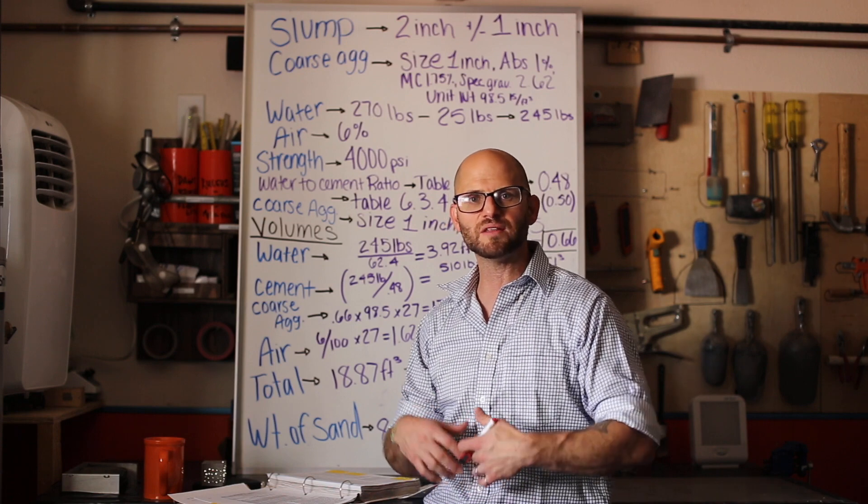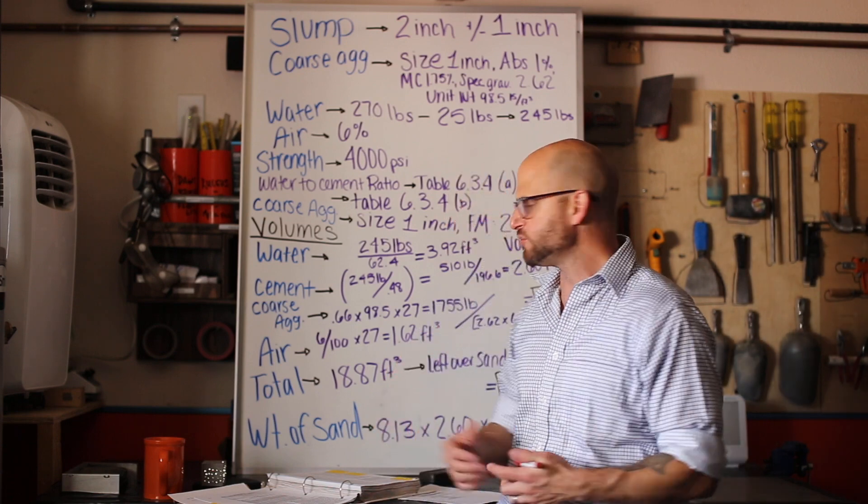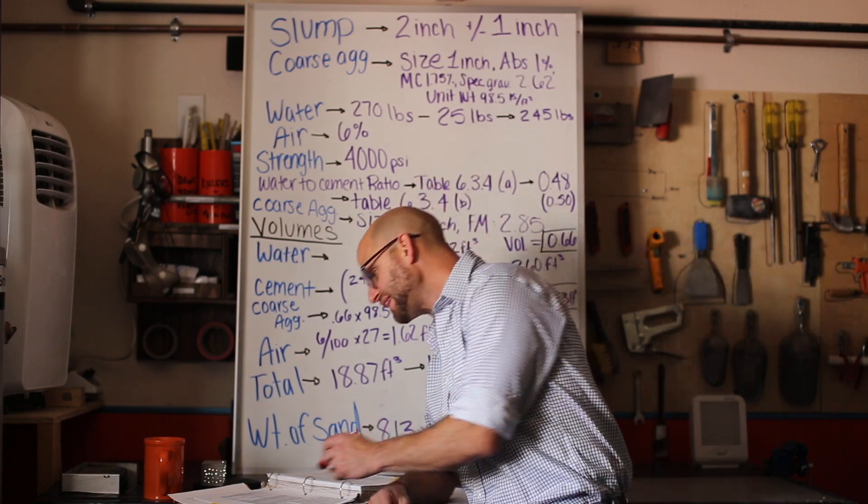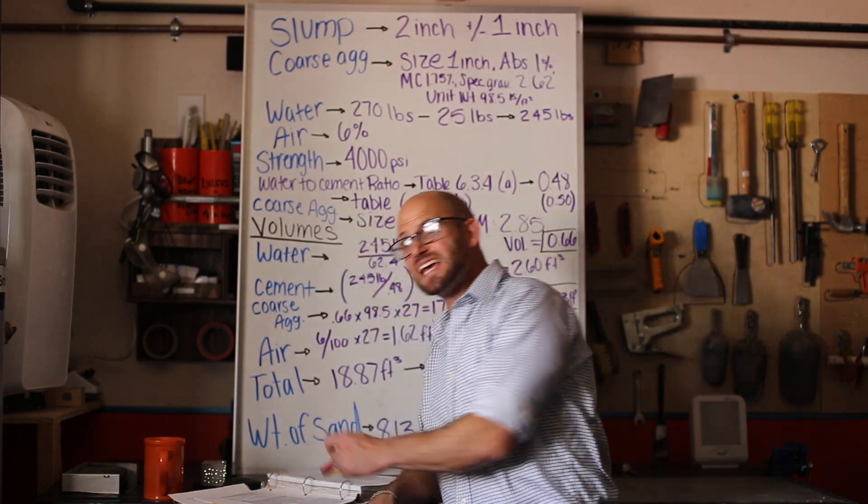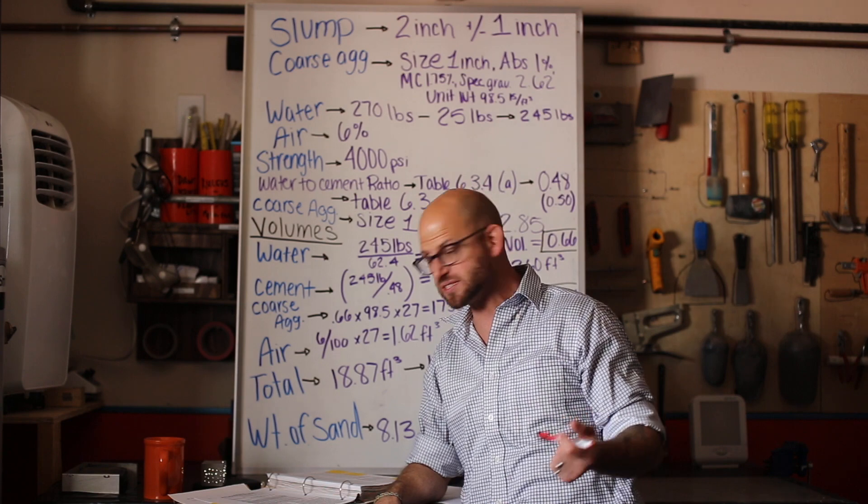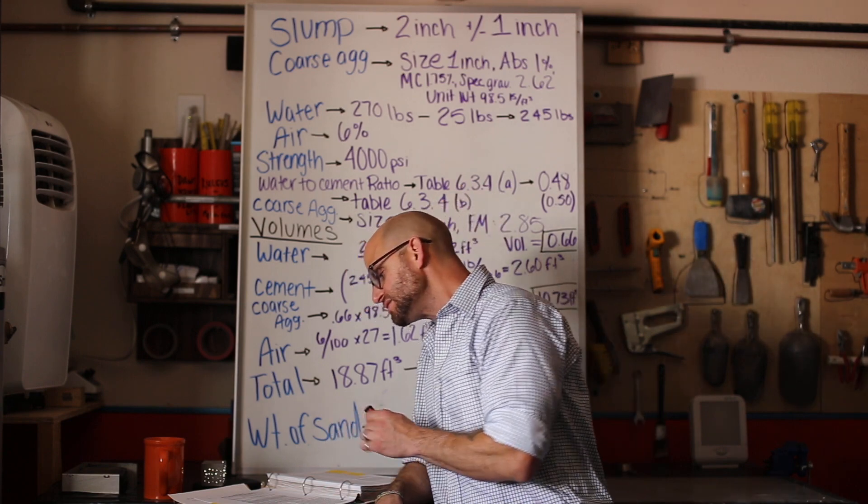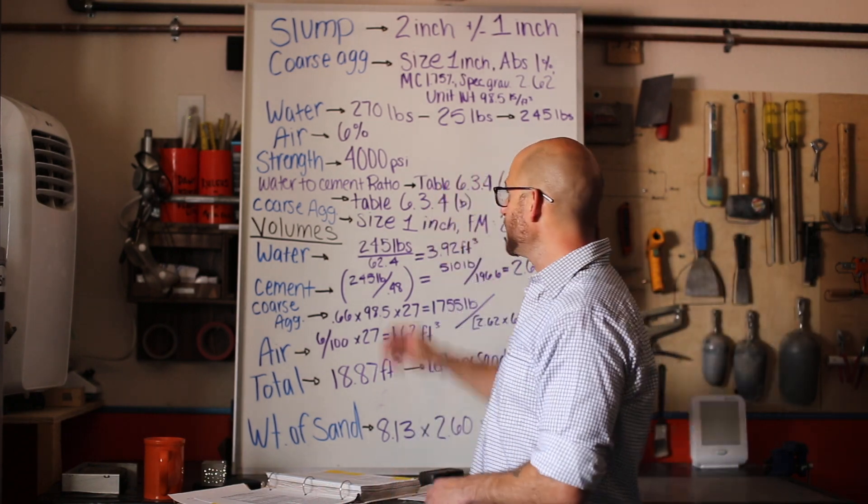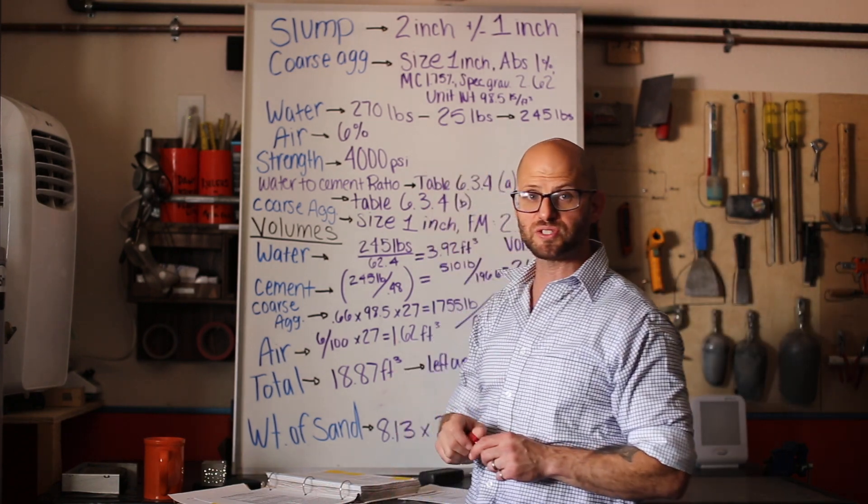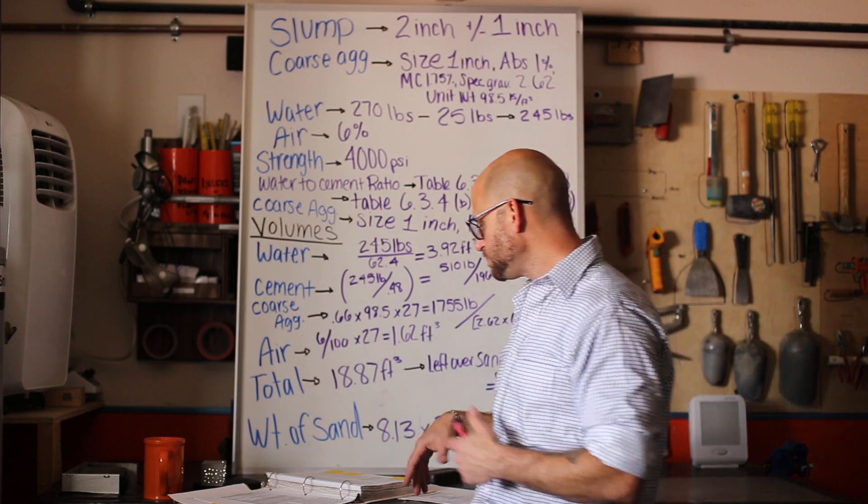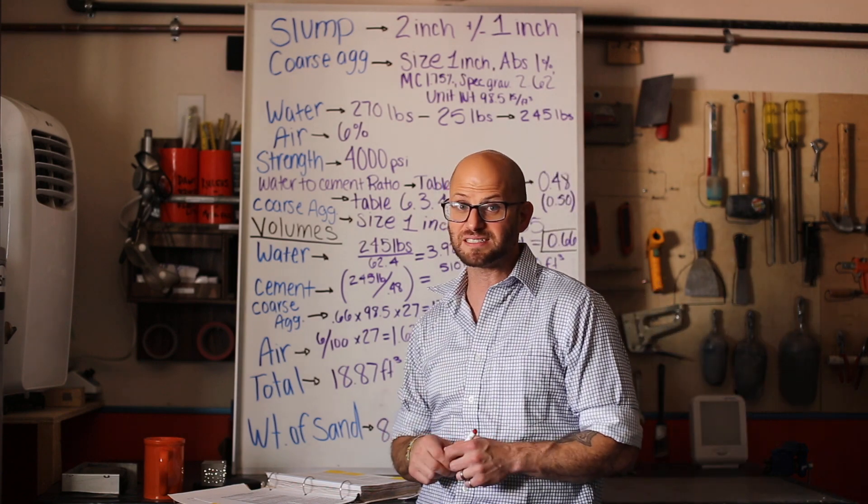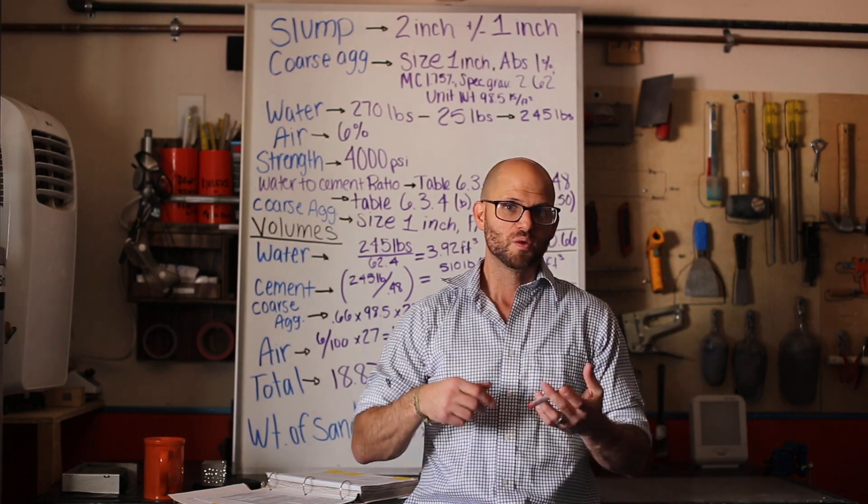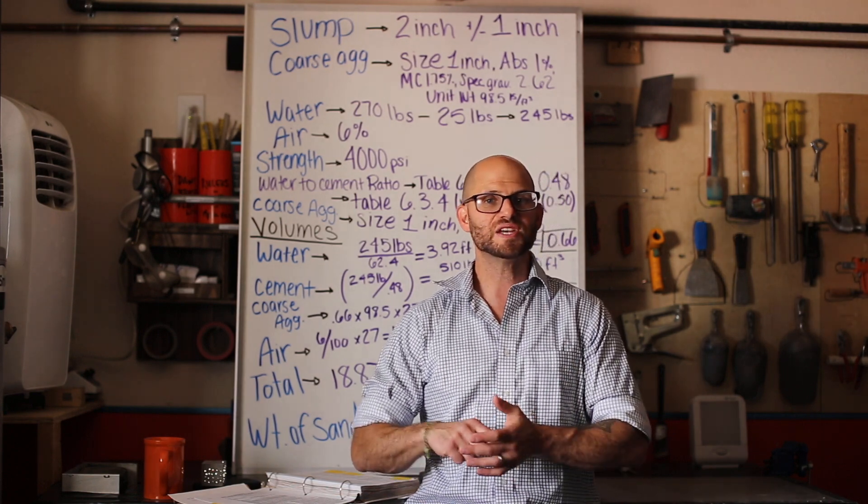We're in a severe to moderate or moderate to severe freeze-thaw environment. You can assume we're in Colorado, Michigan, Minnesota where we need a certain amount of air in the concrete to allow that water a place to run when it freezes. We've got an air of six percent and that's going to come from that same table using the aggregate size, the one inch max on the diameter. You go down where it says severe exposure and it tells you 6.0, and we're going to be using an air entraining admixture to get to that.